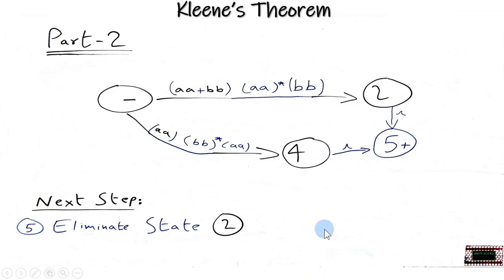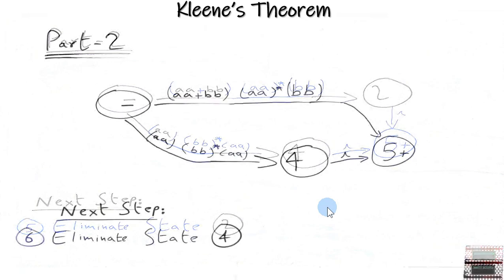In the next steps we are going to remove state number 2 and state number 4. This is not a challenge because the transitions between 2 and 5 and 4 and 5 are null string transitions. So we will simply remove state number 2 and then state number 4.